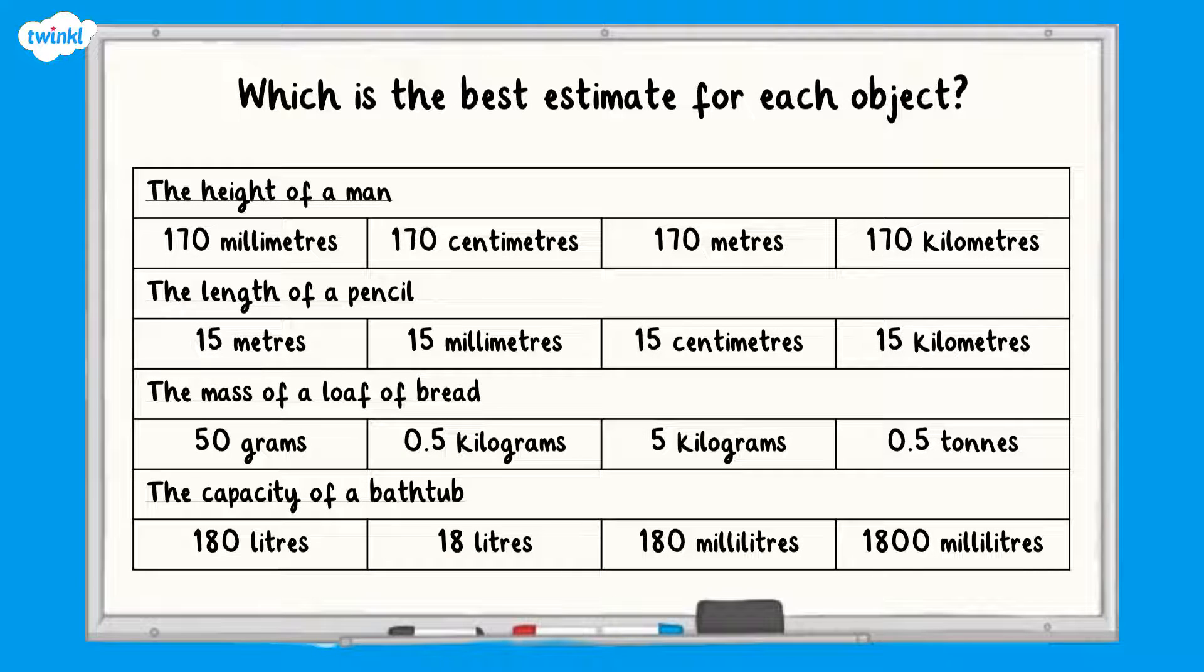Now I think you are ready for another challenge. Pause the video and have a go at this question. Just press play again when you are ready to continue. Which is the best estimate for each object? All finished? Perfect. Here are the answers. A good estimate for the height of a man would be 170 centimetres. For the length of a pencil it would be 15 centimetres. The mass of a loaf of bread would be approximately 0.5 kilograms, which is the same as 500 grams. The capacity of a bathtub is approximately 180 litres. Well done if you got that correct.